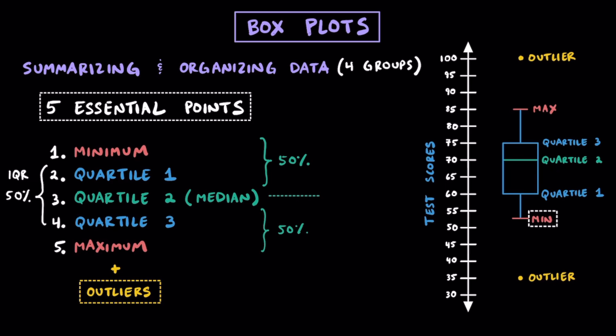Here we have the minimum, which is about 52.5, and that's going to be the lowest test grade. Next, we have quartile 1 or the lower quartile, which was about a 60, so 25% of the students scored below this number. Then we have quartile 2, also known as the median, and that looks like it's about 70 — meaning half the class, or 50% of students, scored above this and 50% scored below it. Next, we have quartile 3, which looks like it's about 75, and that means that if you scored above a 75 you were in the top 25% of the class. And finally, we have the maximum score here, which looks like it's about 85, and this is the highest grade within this class.